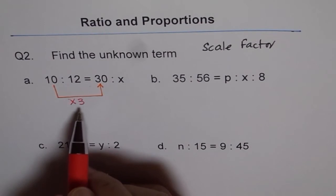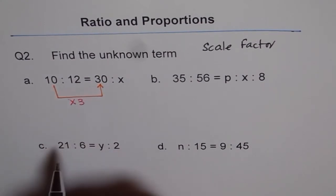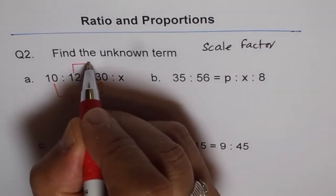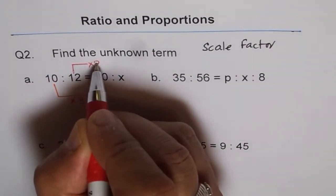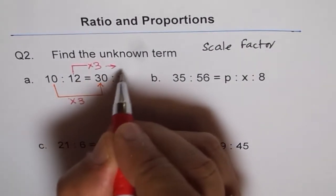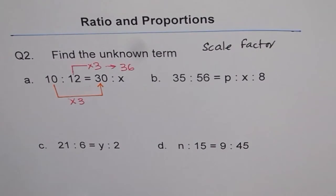So we have to use the scale factor in ratios to get the result. So to get x, what we will do? We will times 12 by 3. So 12 times 3 is 36. So x should be 36.